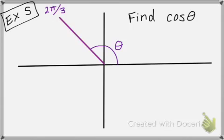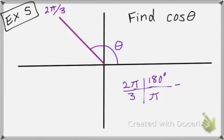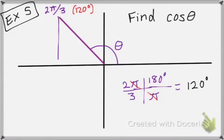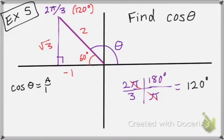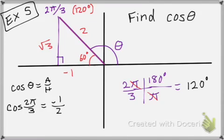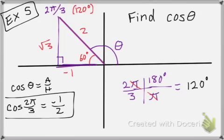Now in this case I am given my angle in radians, so the first thing I'm going to do is convert that to degrees. So 2 pi over 3 — pi on the bottom, 180 degrees on top, pi's cancel out — and 360 divided by 3 is 120 degrees. So this is actually like asking us to find the cosine of 120 degrees. If I drop this down, my reference angle is 60. Mark it up: negative 1, 2, positive root 3. Cosine is adjacent over hypotenuse, so the cosine of 2 pi over 3 is negative 1 over 2.